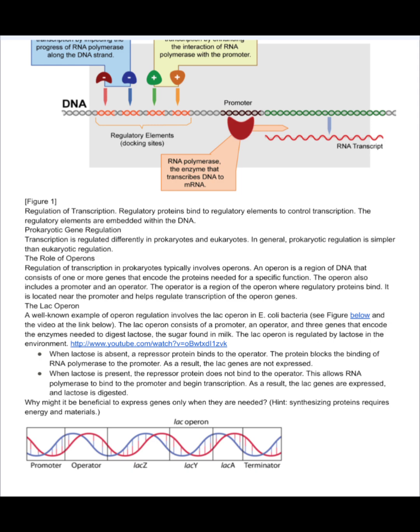A well-known example of operon regulation involves the Lac Operon in E. coli bacteria. The Lac Operon consists of a promoter, an operator, and three genes that encode the enzymes needed to digest lactose, the sugar found in milk. The Lac Operon is regulated by lactose in the environment. When lactose is absent, a repressor protein binds to the operator. The protein blocks the binding of RNA polymerase to the promoter. As a result, the Lac genes are not expressed.